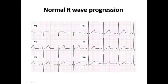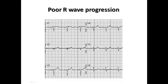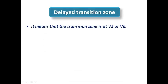In V1, V2, and V3 the R-S ratio is still less than 1, but in V4 the R-wave becomes taller than the S-wave, so the transition zone here is at V4 — this is normal R-wave progression. And here is another example of poor R-wave progression in which the transition is delayed until V6, as the first lead where the R-wave is more than or equal to the S-wave is V6.